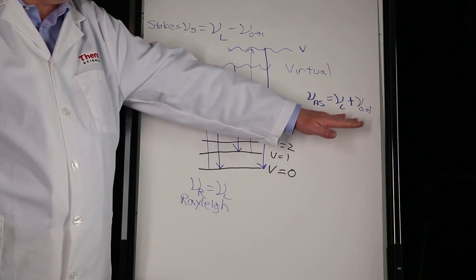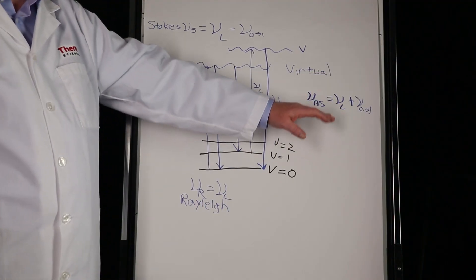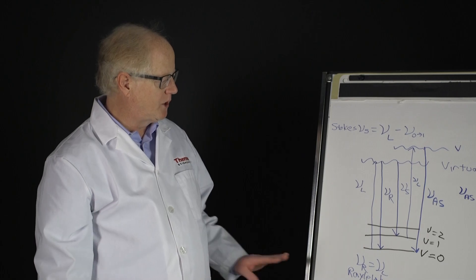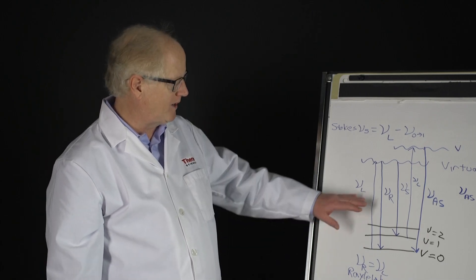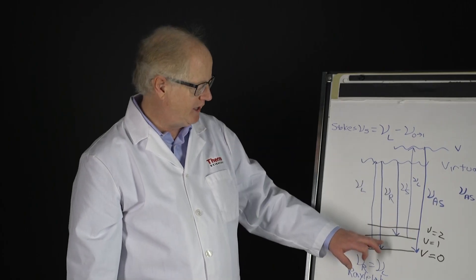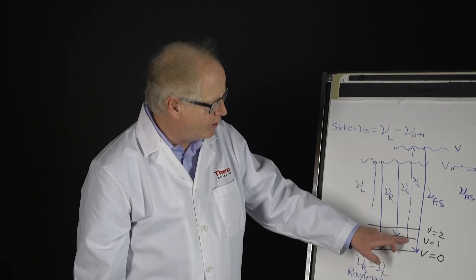And the anti-Stokes photon, which is higher in energy—as we'll see when we talk about fluorescence, it has certain advantages. It would be nice to be able to use this, but because of something called the Boltzmann distribution, this is not always that useful. So that's the basic idea behind Raman: the three different scatters—Rayleigh, Stokes, and anti-Stokes—the interchange of energy, and the key underlying fact that we are looking at a vibrational excitation.